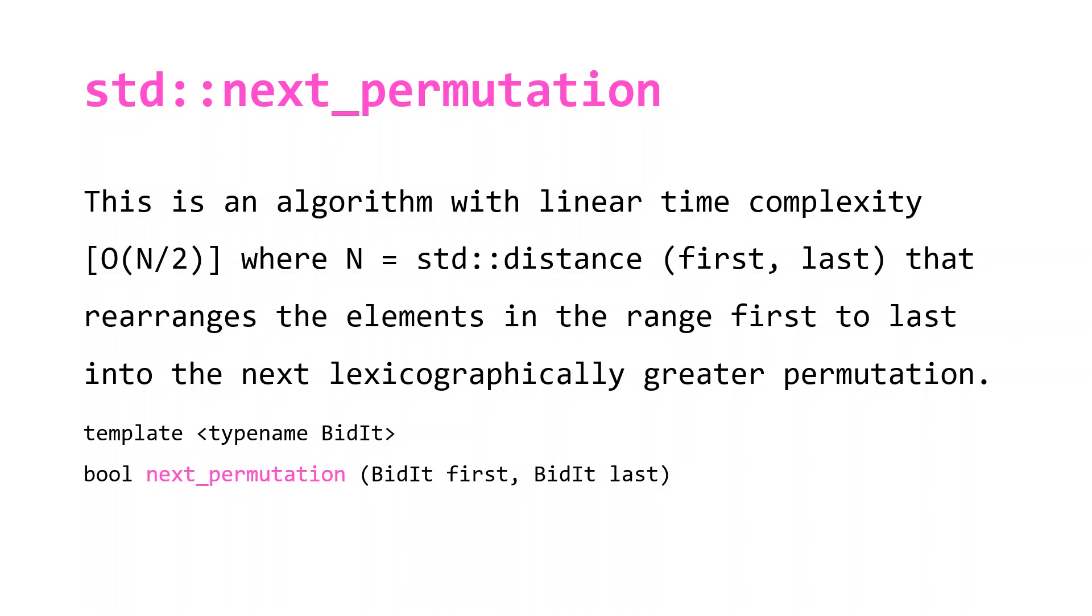std::next_permutation is an algorithm with linear time complexity, technically O(N/2), where N is equal to the distance between first and last, that rearranges the elements in the range first to last into the next lexicographically greater permutation.